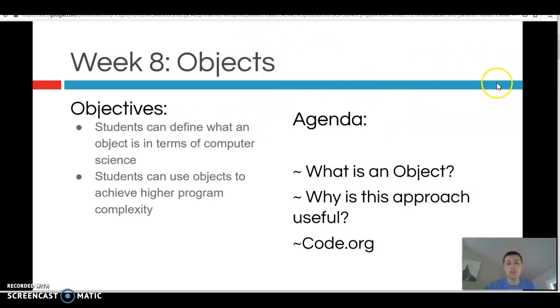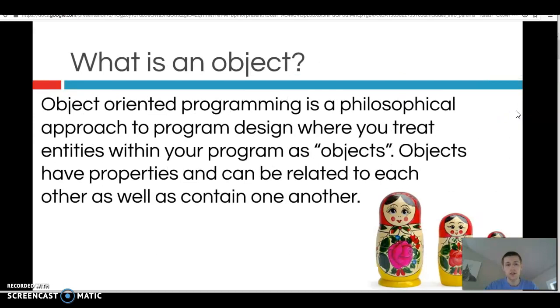We're going to define what an object is in terms of computer science, and you're going to use objects to achieve higher program complexity, which is going to be great. Let's talk about it. What is an object? So there is this whole philosophy around this thing called objects. It's called object oriented programming.